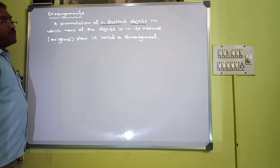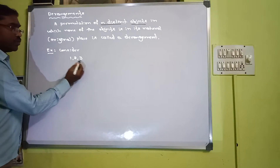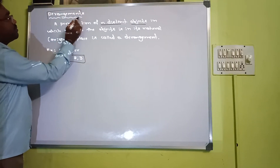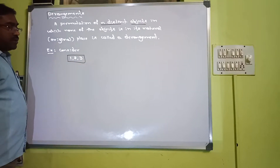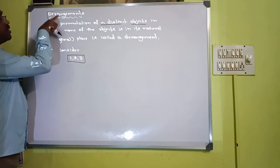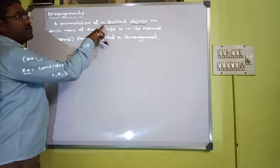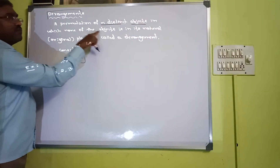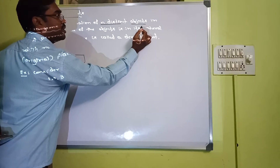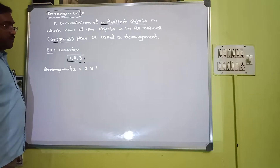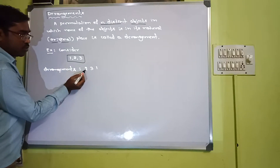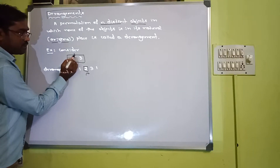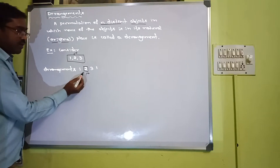Now let us take an example. Consider 1, 2, 3. We are going to write the derangement of this order. A derangement is a permutation of three objects in which none of the objects is in its natural place. Here, 2 is in the second place originally, but we have taken it in a different place.